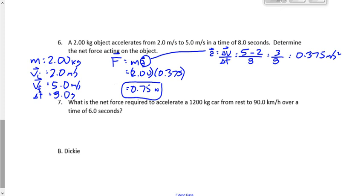Number seven, what's the net force required to accelerate a 1,200-kilogram car from rest to 90 kilometers per hour over time of 6 seconds? This is a lot like the first question. The mass is 1,200 kilograms. Tell me what VI is this time. It starts at rest, right? But a little bit harder because of VF. VF is 90 kilometers per hour, but we want to convert that to meters per second.